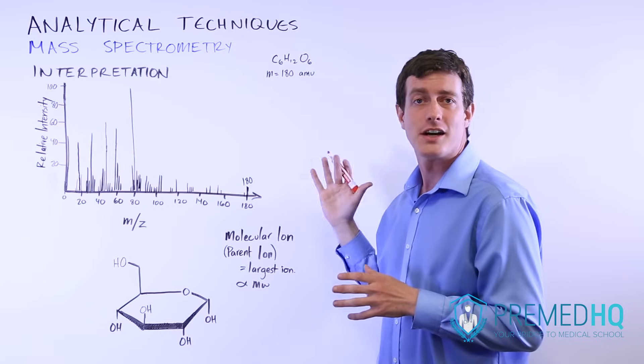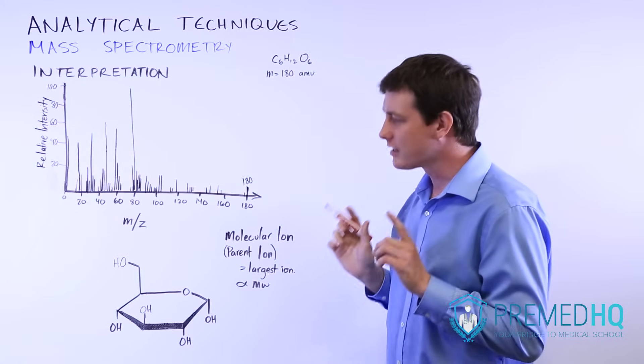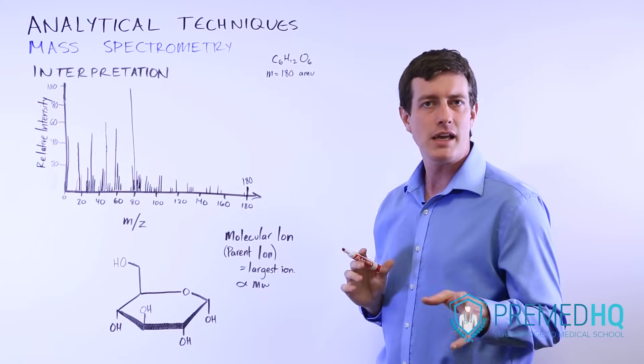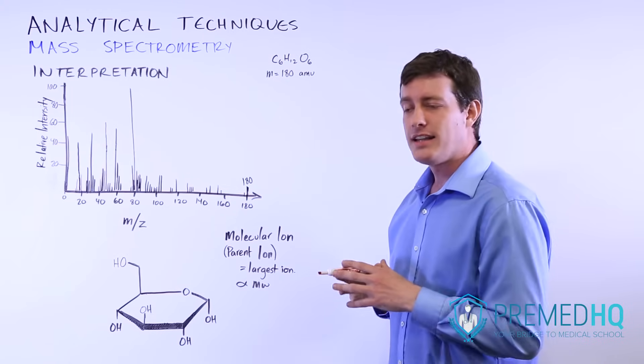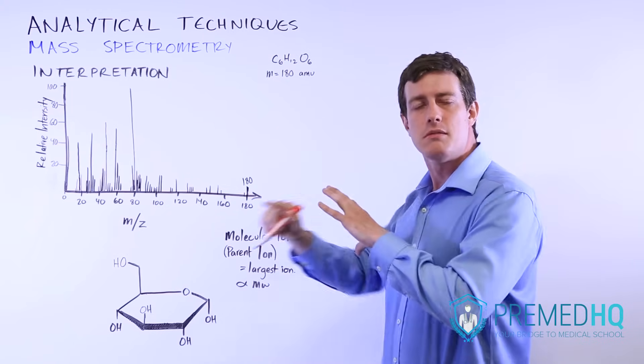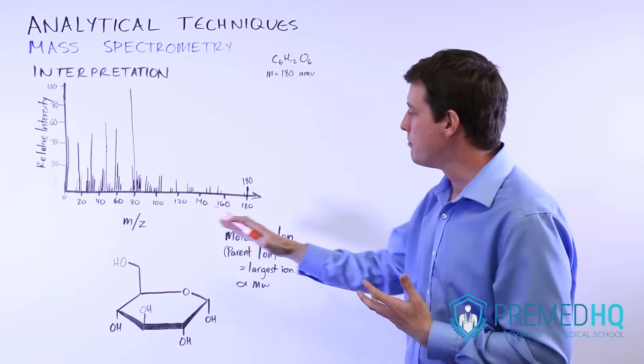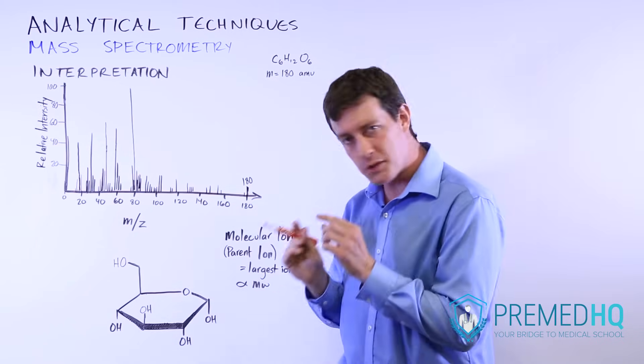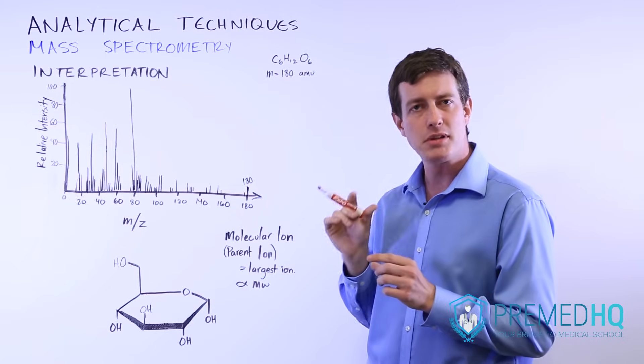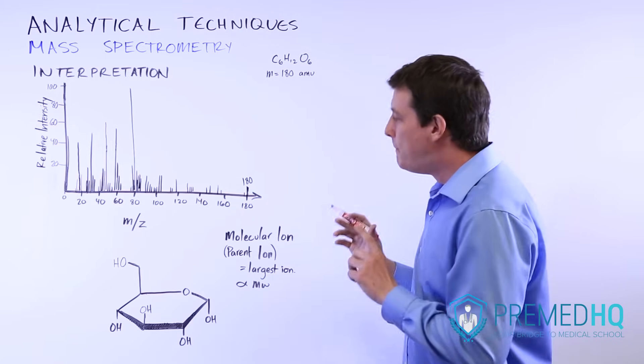Before we embark on this discussion, I think it's important to clarify one point from a previous video. When you shoot the beam of electrons through your sample, a lot of times they can break bonds and things like that, so you get little fragments that have a plus one charge.